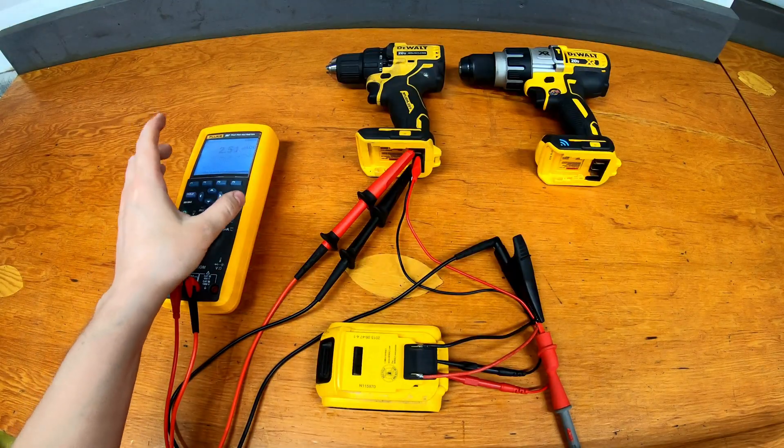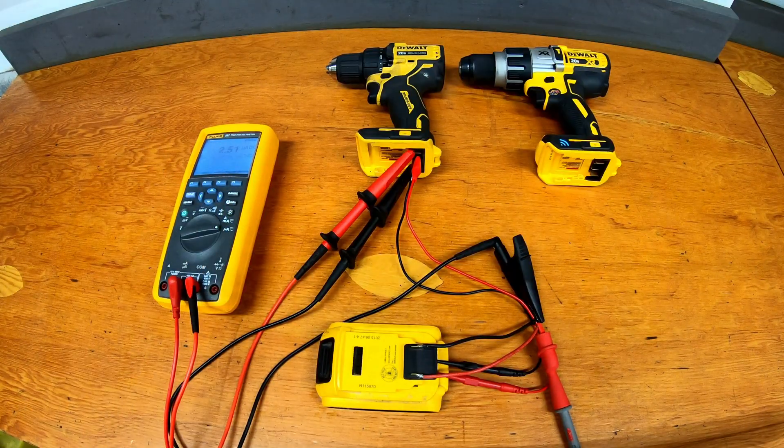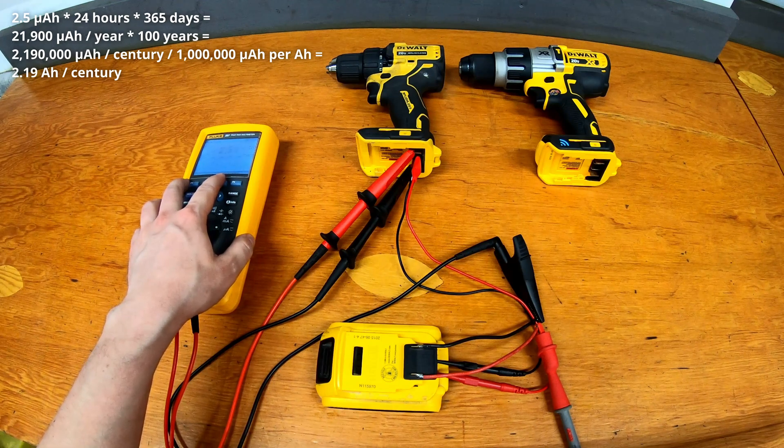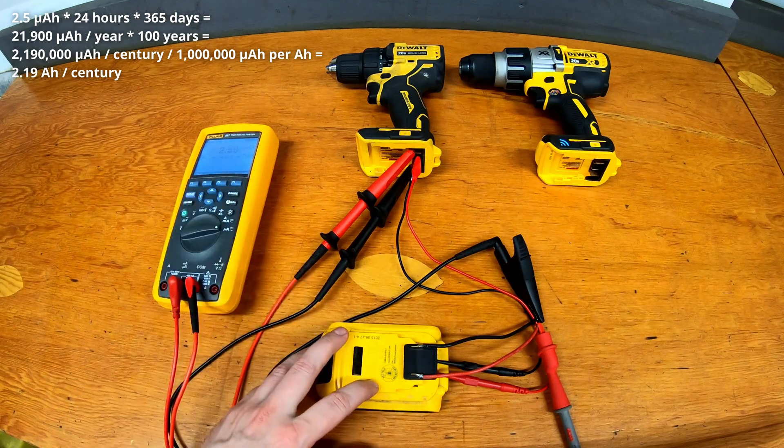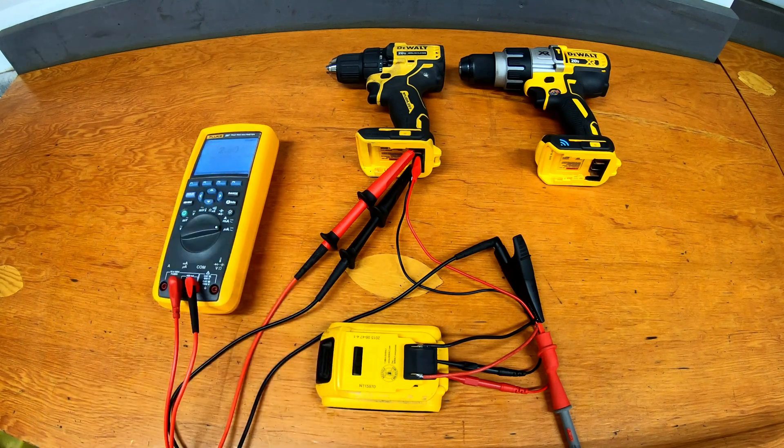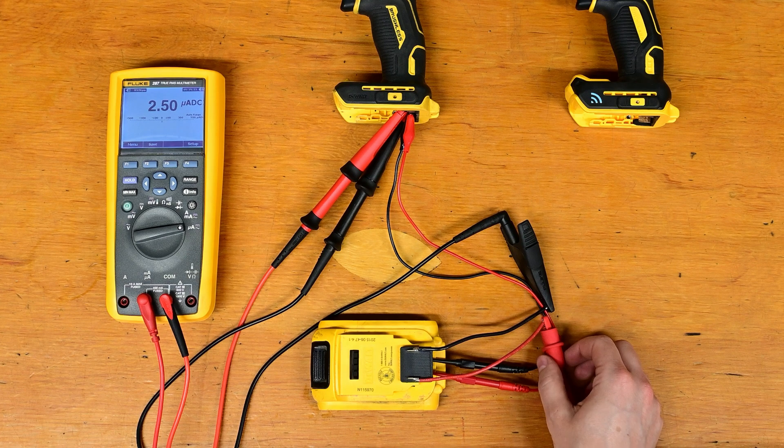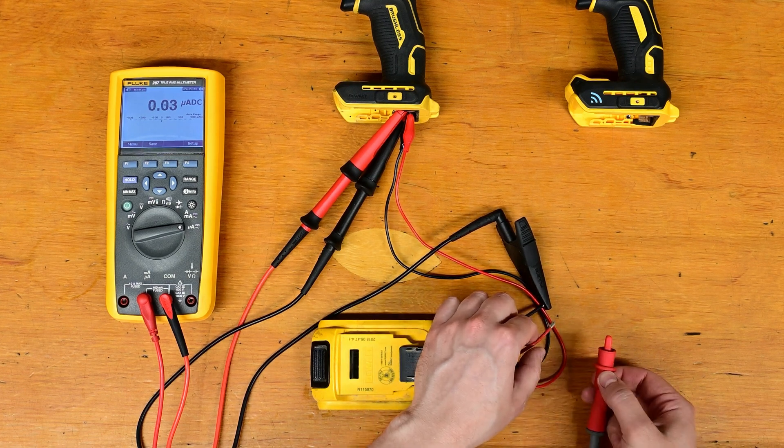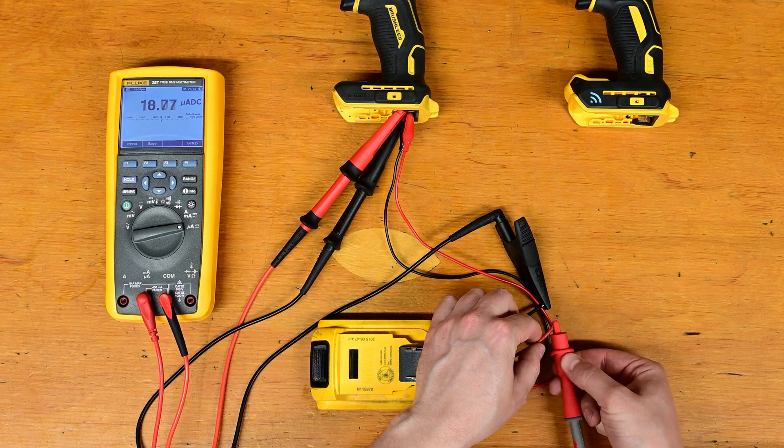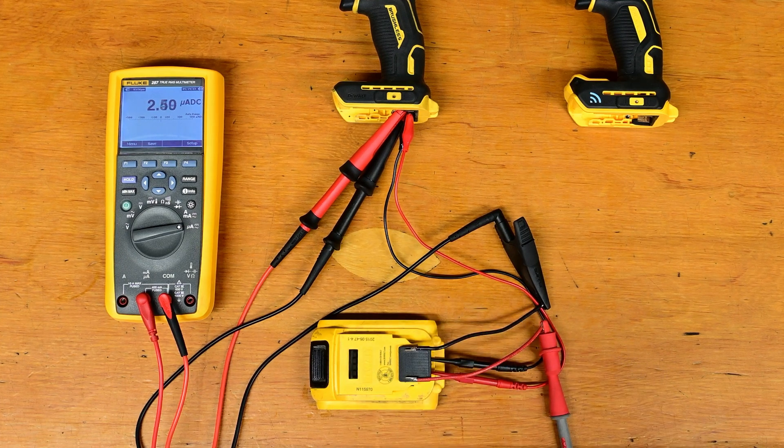To put that in perspective a microamp is one millionth of an amp. At this draw of 2.5 microamps this tool could actually run for close to 100 years on a 2 amp hour pack so it's a pretty minuscule amount of power that it's actually drawing. Just to prove that it is actually drawing power if I disconnect here you can see it goes down to basically zero and reconnecting there we're back to that 2.5 microamps.